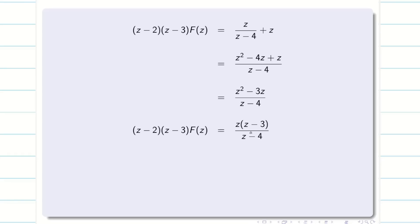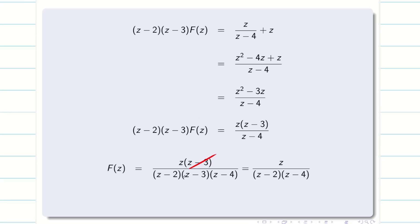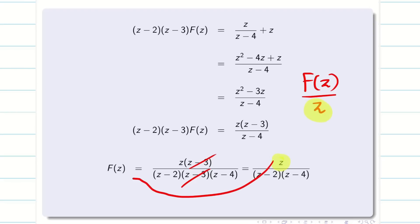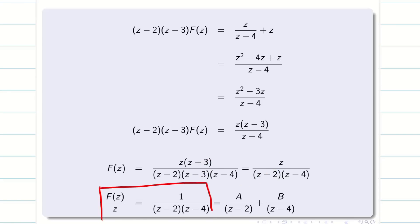Taking Z outside and dividing both sides, Z−3 cancels on both sides, leaving F(Z) = Z/[(Z−2)(Z−4)]. For the partial fraction method, we must always reserve one Z in the numerator. Therefore, write F(Z)/Z = 1/[(Z−2)(Z−4)].